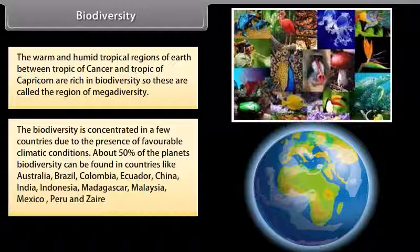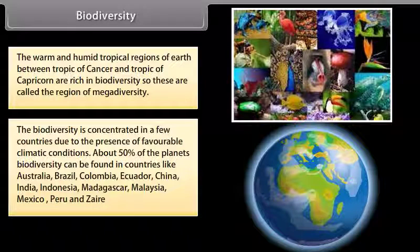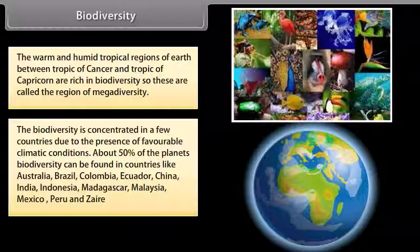The biodiversity is concentrated in a few countries due to the presence of favorable climatic conditions. About 50% of the planet's biodiversity can be found in countries like Australia, Brazil, Colombia, Ecuador, China, India, Indonesia, Madagascar, Malaysia, Mexico, Peru, and Zaire.